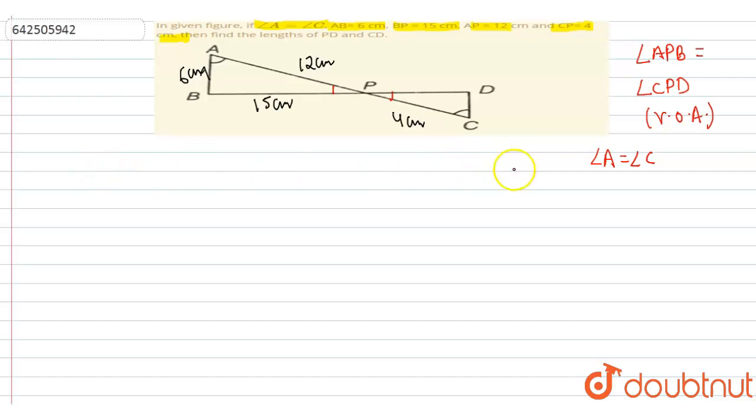So what happens? These two triangles, triangle ABP is similar to triangle CDP from angle angle criteria.